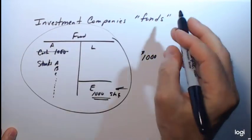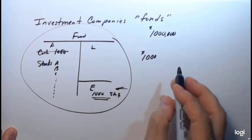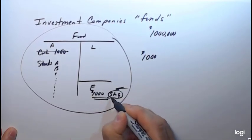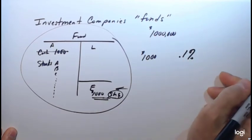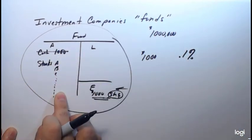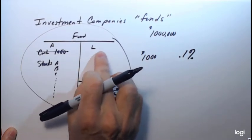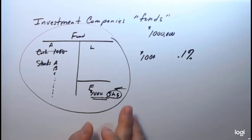If the entire fund is worth a million dollars and you put in a thousand dollars and got shares, you would own 0.1% of the assets, have obligations of 0.1% of the liabilities, and be a 0.1% equity owner of that one-million-dollar fund. We own a proportional share of the fund.